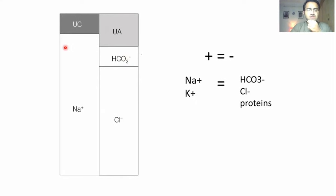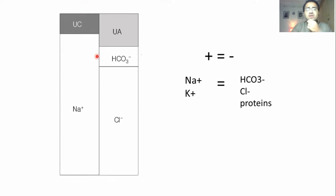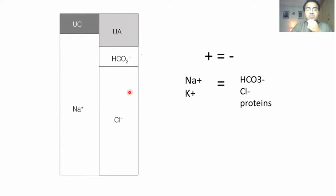In this diagram, we've put positively charged ions on the left side and negatively charged ions on the right side. The problem is we cannot measure all the ions in blood. We cannot measure the concentration of each and every ion. What we can do is measure the dominant ions. Sodium is the dominant positively charged ion — we measure its concentration.